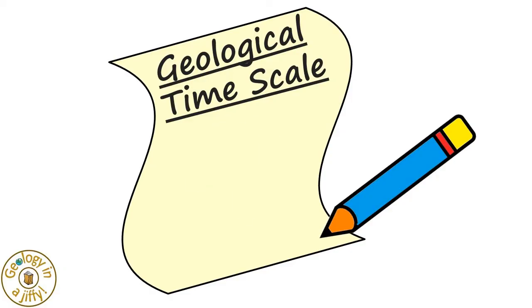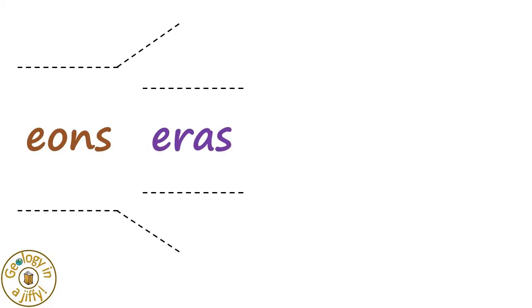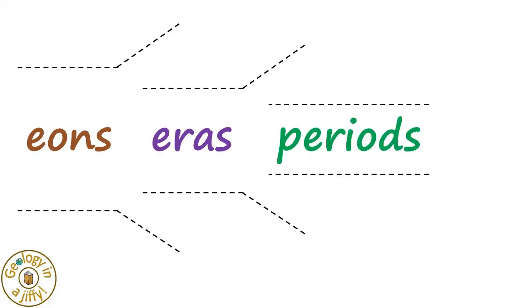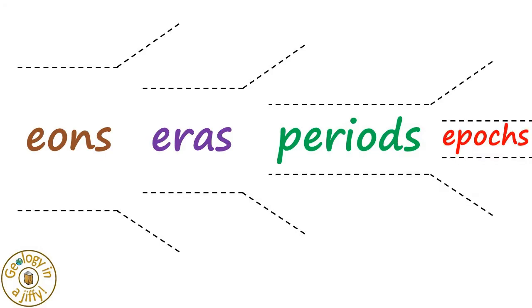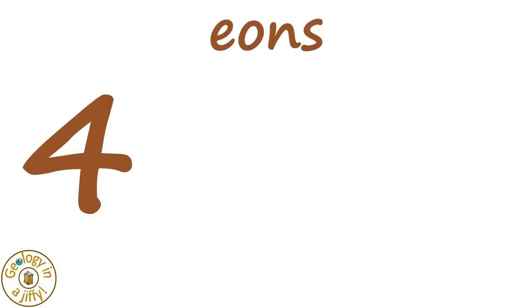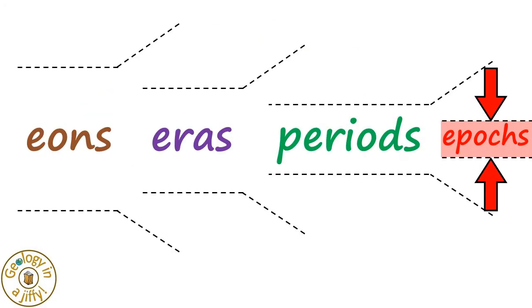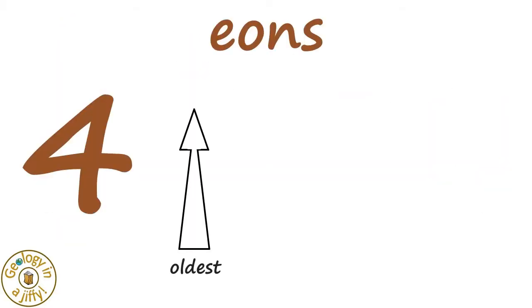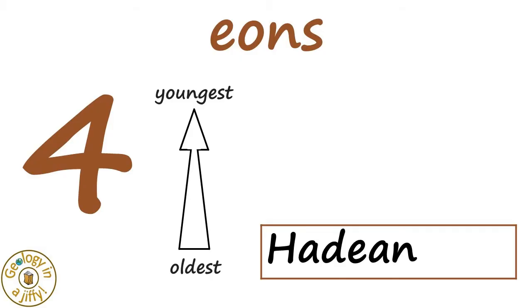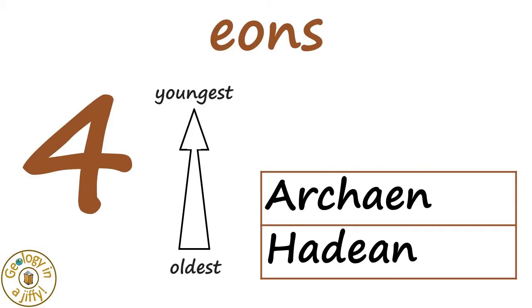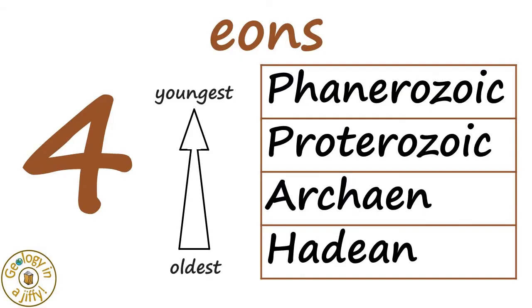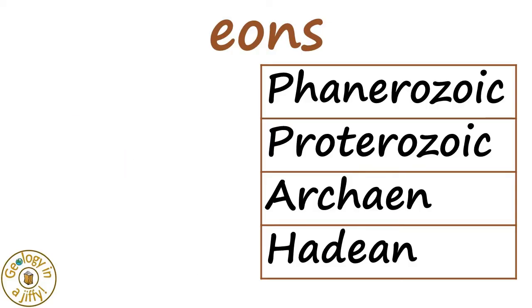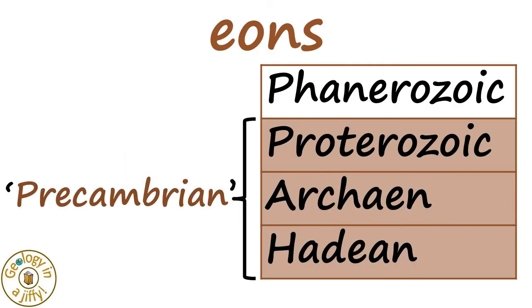The scale is divided into four major time intervals called eons. Eons are subdivided into eras, eras are subdivided into periods, and periods are subdivided into epochs. There are four eons — these having the largest intervals of geological time — which, starting with the oldest and moving up to the youngest, are the Hadean, the Archean, the Proterozoic, and the Phanerozoic. The oldest three eons are collectively known as the Precambrian.